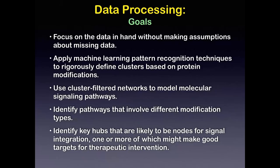Using the machine learning pattern recognition algorithm TSNE, we can rigorously define clusters based on protein modifications. It's important to rigorously define clusters because we want to use them to filter networks of protein-protein interactions to model molecular signaling pathways. Because we have different types of modification, we can identify pathways that involve, in addition to phosphorylation, acetylation and methylation. Key proteins that appear in many pathways — hubs — are likely nodes for signal integration, and these might make good targets for therapeutic intervention.